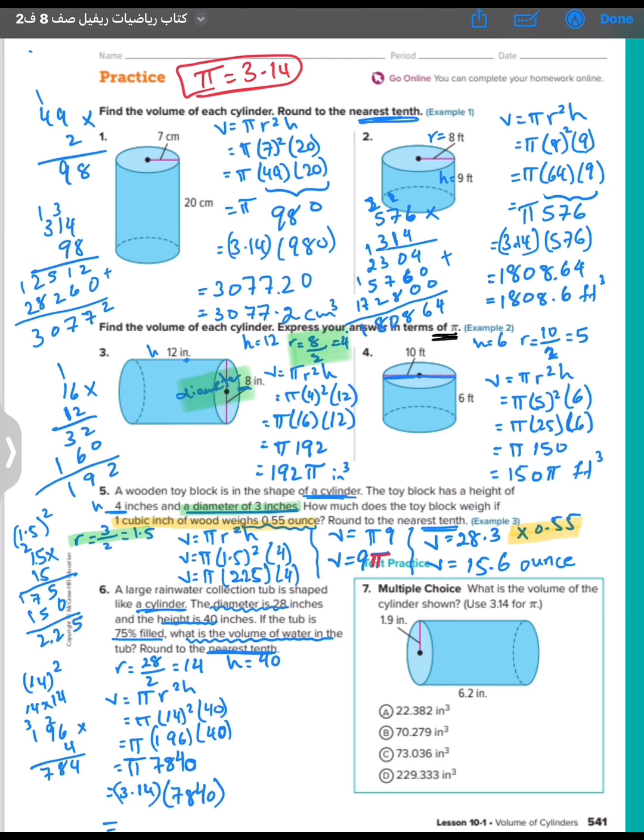And to fill it as 75 percent, so I will write 24,617.6 times 75 over 100, or you can write it like that: 24,617.6 times 0.75. It will be 18,463.2. And finish question number six.